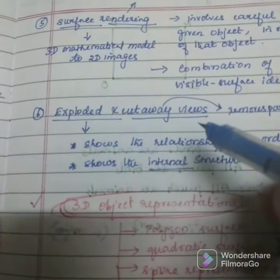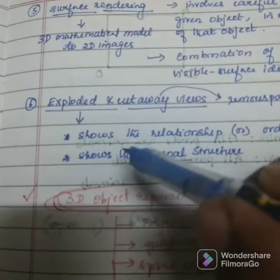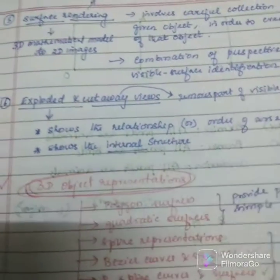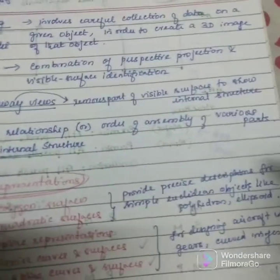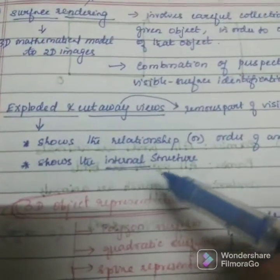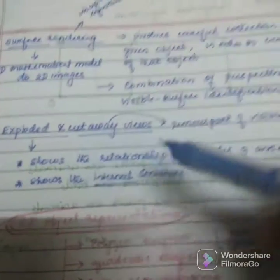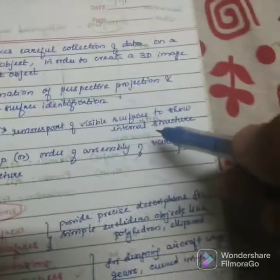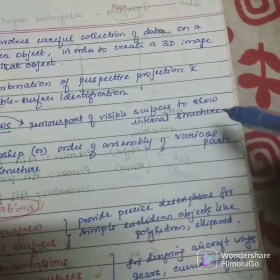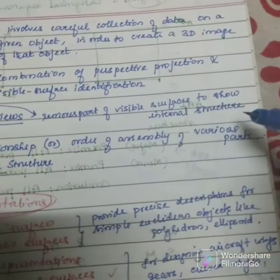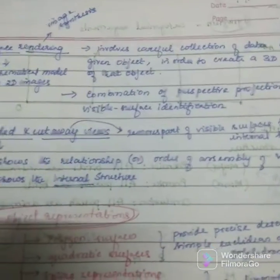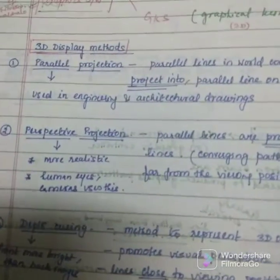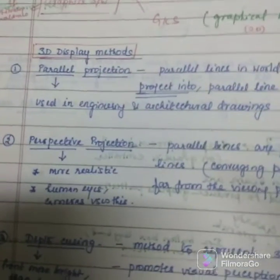The last point is exploded and cutaway views. It shows the relationship or order of assembly of various parts and shows the internal structure. Cutaway views remove part of the visible surface to show the internal structure. These are the six types under 3D display methods.